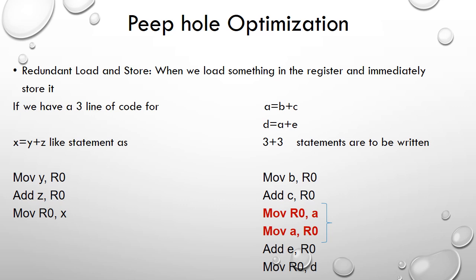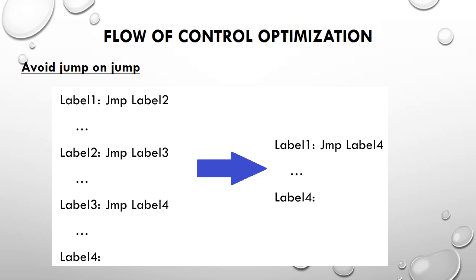The second method is to avoid jump-on-jump. For example, at label 1 it says jump to label 2, at label 2 it says jump to label 3 unconditionally, and at label 3 it says jump to label 4 unconditionally. This chain of jumps can be replaced: at label 1 itself we can say jump directly to label 4. We must avoid such unnecessary jump-on-jump sequences.